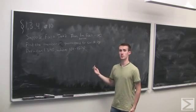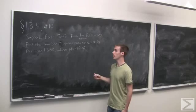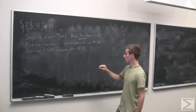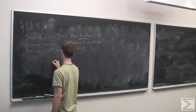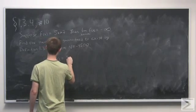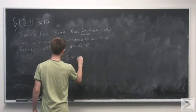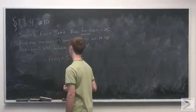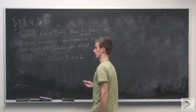This problem asks you to find that actual value of m. We want f(m) equals 5m plus 7 to be less than negative 4500.